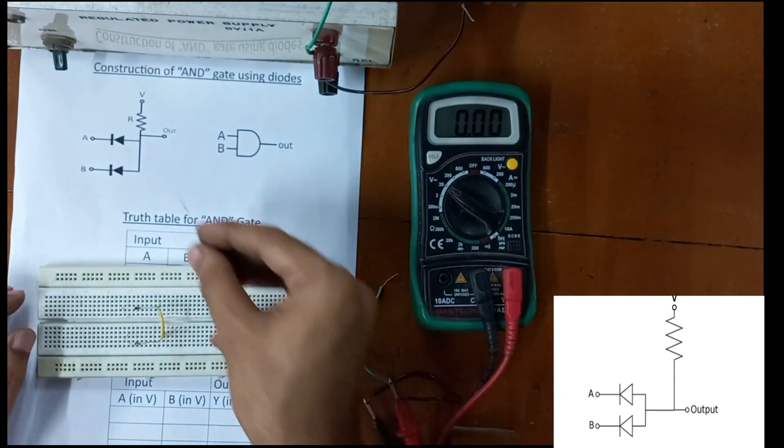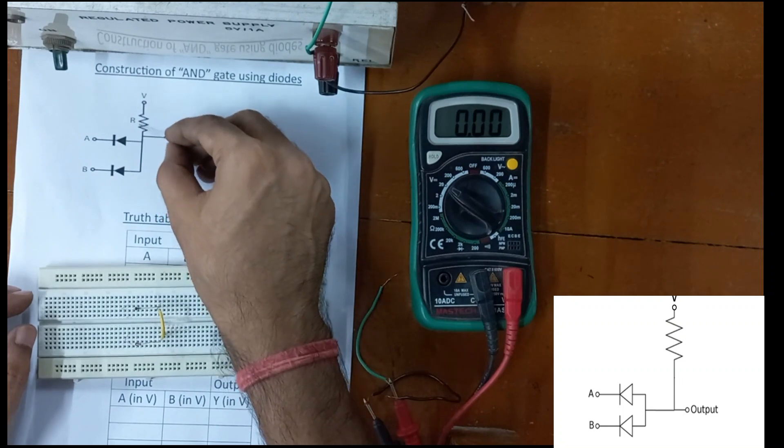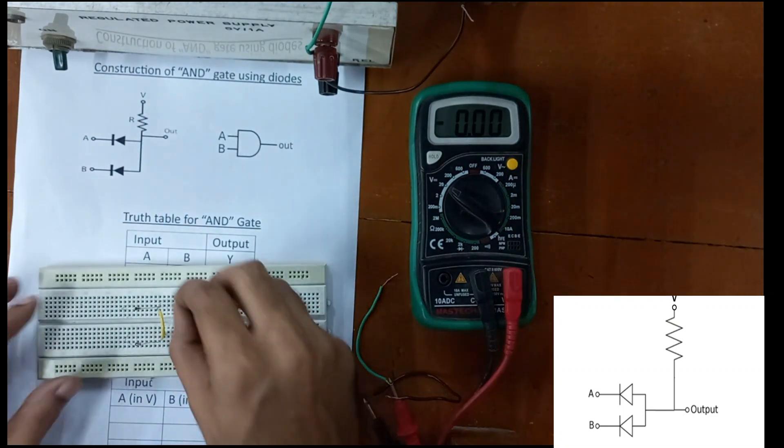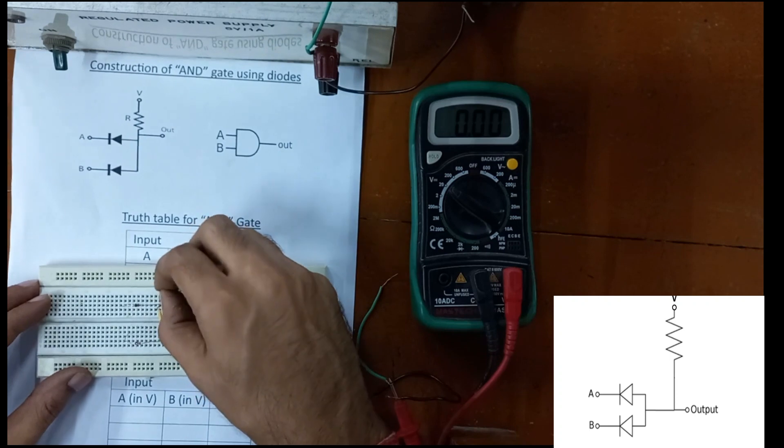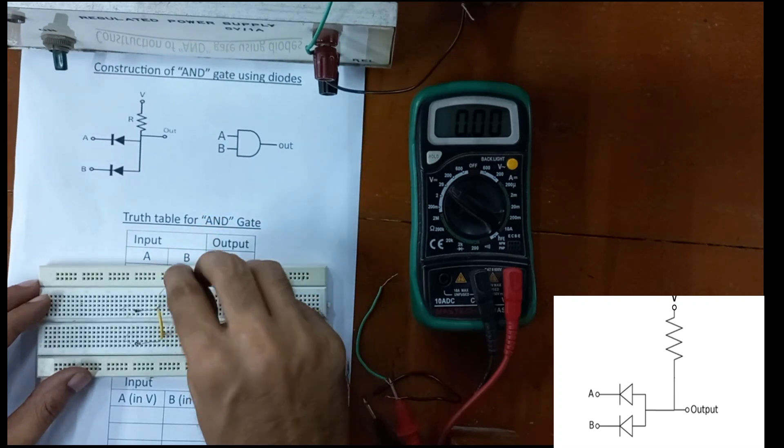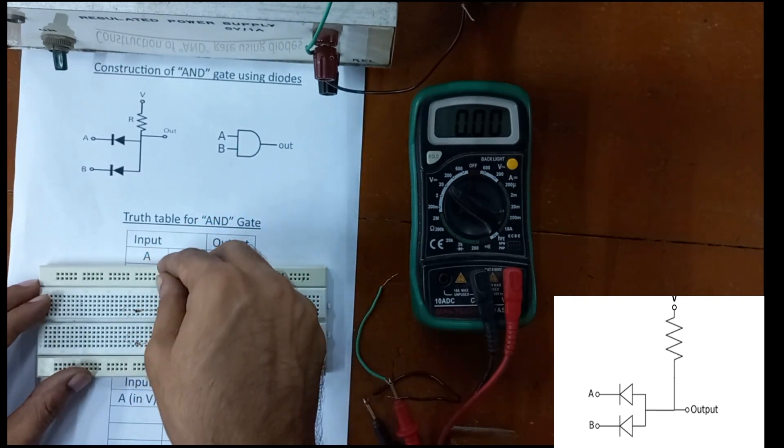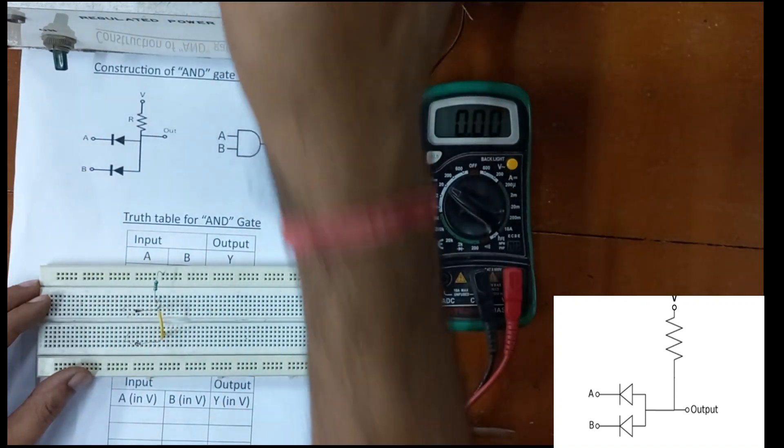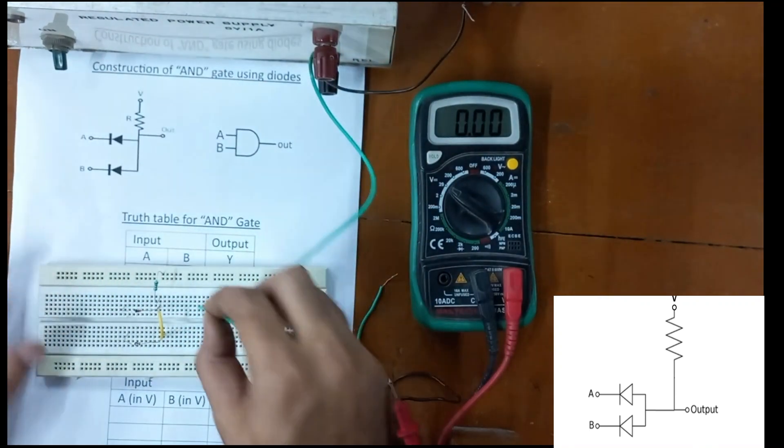Now connect the resistance. The resistance is connected from the P sides of the diode to the high voltage supply. To connect it with the high power supply, we keep one end of the resistance outside.